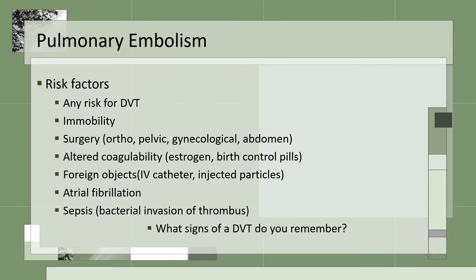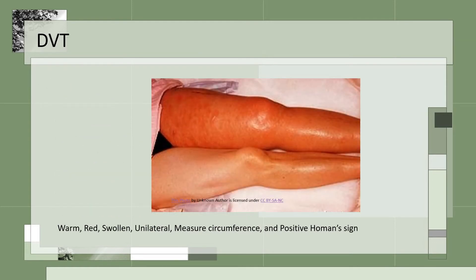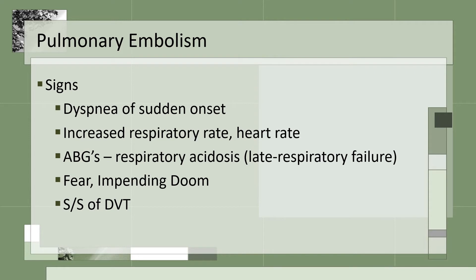Signs of a DVT include a large unilateral difference in the legs — the affected leg is warm, red, and swollen. We measure the circumference and test for a positive Homans sign. Signs and symptoms of pulmonary embolism include sudden onset dyspnea, increased respiratory rate and heart rate, ABGs showing respiratory acidosis which indicates late respiratory failure, fear and impending doom, and the signs and symptoms of a DVT. The severity depends on the size of the clot.